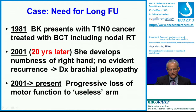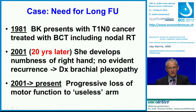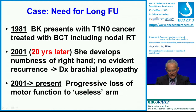This is a patient of mine who I saw and treated in 1981. She had a very early breast cancer. This is before the time when we were doing axillary surgery, and she got treated with breast and nodal irradiation. She did fine for 20 years when she came back with some minor numbness in her right hand, and multiple workups showed no evidence of recurrence. We established, by exclusion, a diagnosis of brachial plexopathy. And over the next decade, she had progressive loss of motor function, leading to essentially a useless arm.